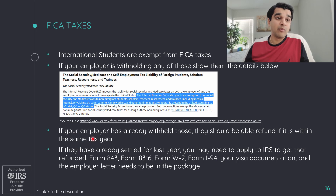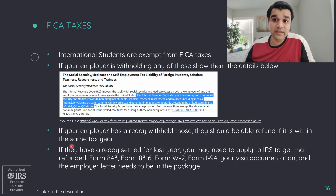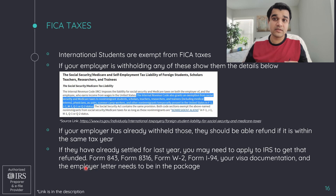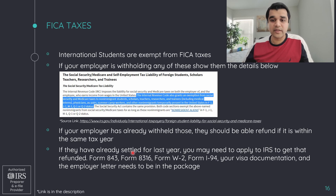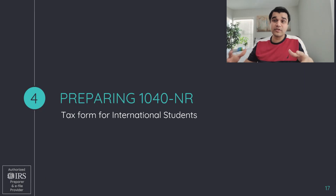If your employer is withholding FICA taxes, show them the IRS link confirming your exemption. If they've already withheld it but haven't sent it to the IRS, they can refund you directly. If already sent to the IRS, you must file Form 843 and Form 8316, along with your W-2, I-94, and an employer letter, to request a refund from the IRS.